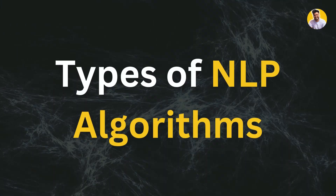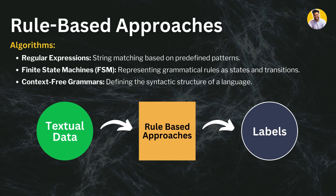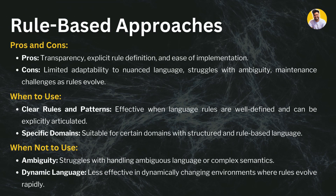Now, what are the different types of NLP algorithms used in generative AI? The first type is rule-based approaches, which include regular expressions, finite state machines, and context-free grammars. These algorithms perform NLP tasks based on predefined rules, with no pattern recognition or deep learning models applied. The pros are that they are completely transparent since the rules are known. The cons are limited adaptability to nuanced language — rules must be changed for every new language — and they struggle with ambiguity and require maintenance.